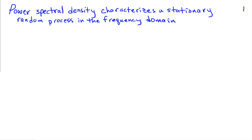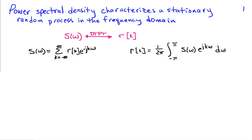The power spectral density is used to characterize random processes in the frequency domain, and this applies to stationary random processes. It is sometimes also referred to as a power spectrum or simply as a spectrum. The power spectrum, called S of omega, is the discrete time Fourier transform of the correlation sequence for the process.